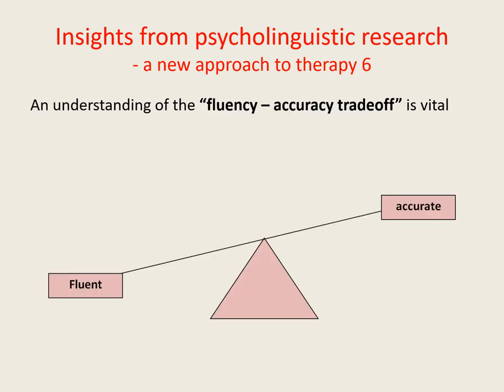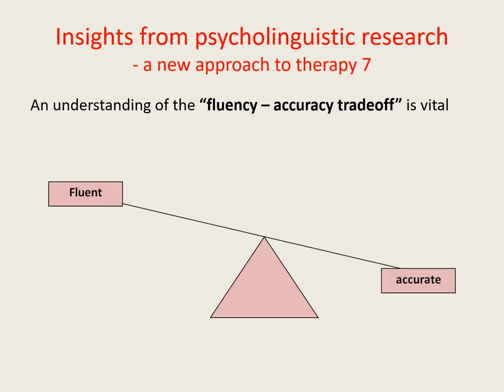A useful concept to bear in mind when deciding on a strategy to reduce the release threshold is that of the fluency-accuracy trade-off. In a nutshell, the more effort we put into articulating our words clearly and accurately, the higher the release threshold rises and the more disfluent we become. In contrast, the more effort we put into simply maintaining the forward flow of speech, the more the release threshold tends to fall and the more error-prone we become. Of course it would be nice if we could be both fluent and accurate at the same time.